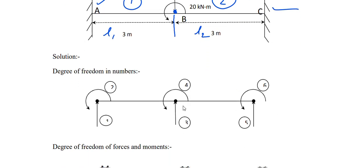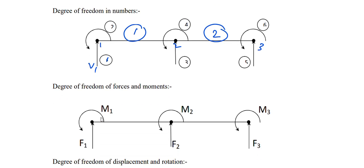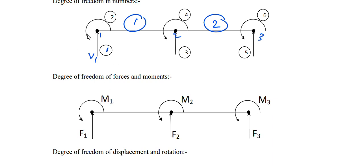You draw the same thing: element 1 and element 2, with nodes numbered 1, 2, and 3. At node 1 there will be a vertical deflection V1 and a slope theta 1. At node 2 there is V2 and theta 2. At node 3 there is also a vertical deflection and a slope. The degree of freedom includes force and moment at each node.